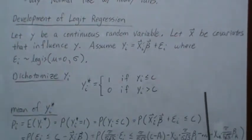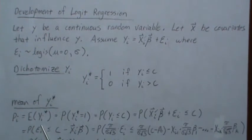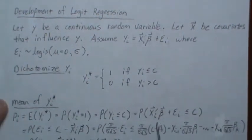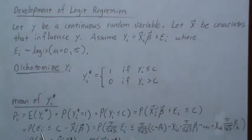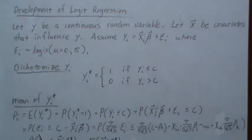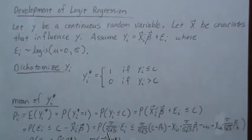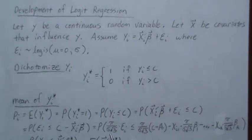Then we dichotomize Y and let it be Y star. It's a one if Y is less than C and zero if Y is greater than C. Now if we look at the mean of Y star, a dichotomized variable, we're going to call that pi or you could call it mu_i. So it's the expected value of Y star, which is the probability that Y star is one, which is equal to the probability that Y is less than C.